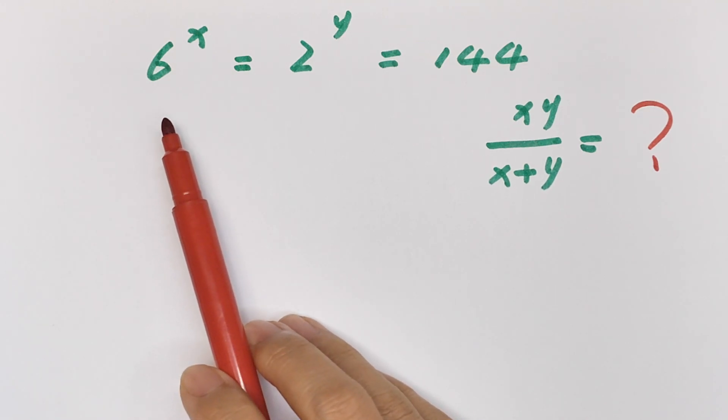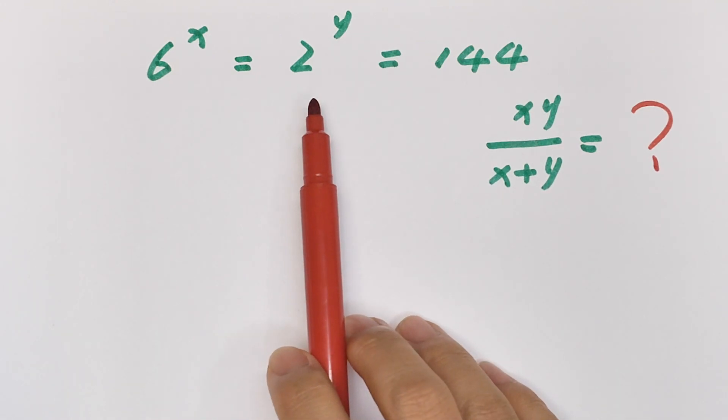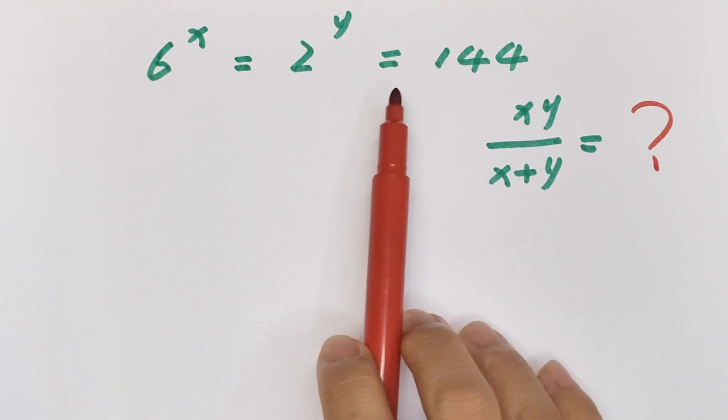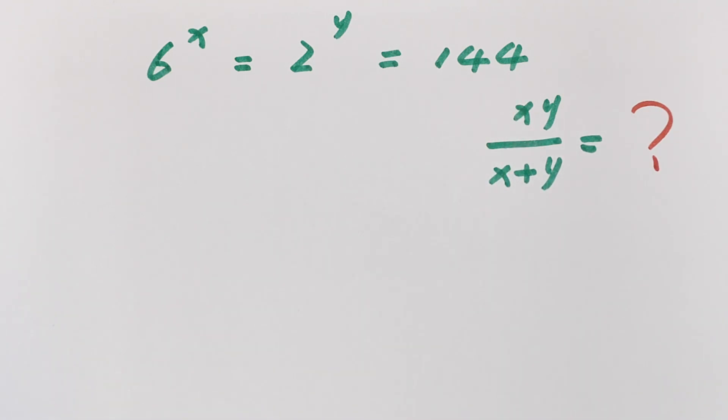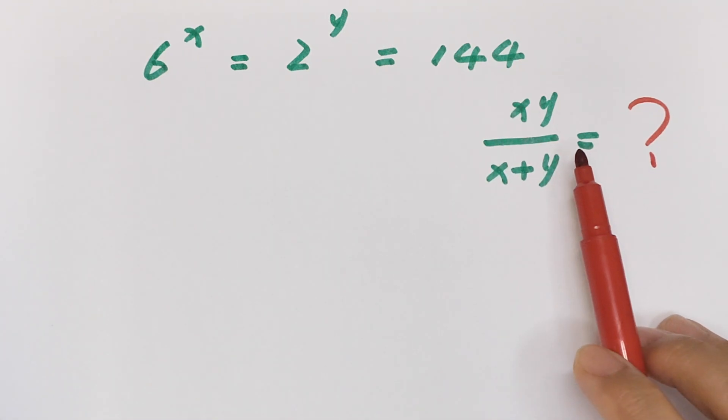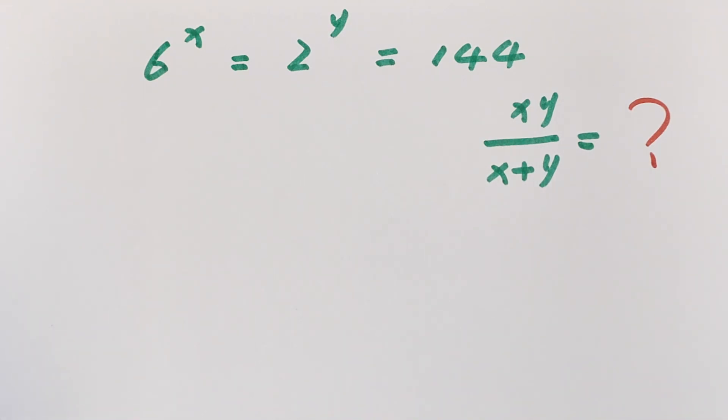We have 6 to the power x equals 2 to the power y equals 144. To find the value of xy over x plus y, we have a variable in the exponent, so I'm going to use logarithms.